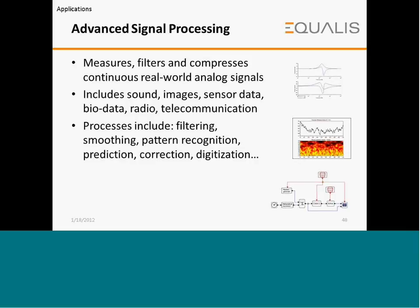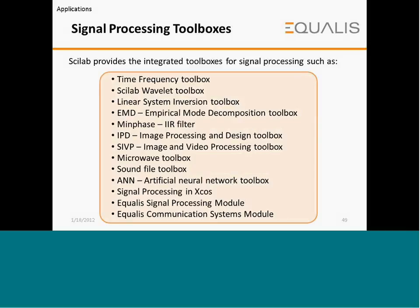Advanced signal processing: SciLab measures, filters, and compresses continuous real-world analog signals. Inputs may include sound, images, sensor data, biodata, radio, and telecommunications. Processes include filtering, smoothing, pattern recognition, prediction, correction, and digitization. SciLab provides integrated toolboxes for signal processing such as the time frequency toolbox, SciLab behavior toolbox, linear system inversion toolbox, empirical mode decomposition toolbox, IIR filter, image costing and design toolbox, image and video processing toolbox, microwave toolbox, sound file toolbox, artificial neural network toolbox, signal processing in X-COS, Equalist signal processing module, and Equalist communication systems module.